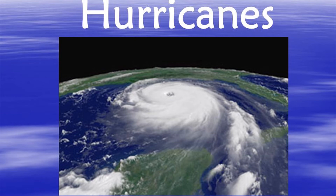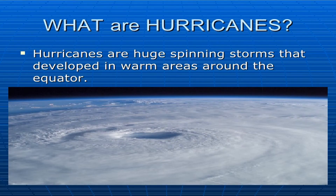Our next natural disaster is hurricane. Hurricanes are big spirals of clouds — huge spinning storms that develop in warm areas around the equator. As you can see in the picture, the center of this storm is known as the eye.